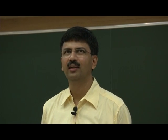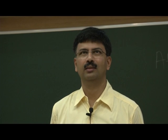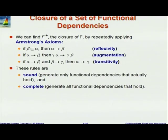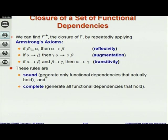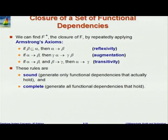How do we know only these three rules are enough? These three are claimed to be sufficient — if anything can at all be logically derived, you can derive it using exactly these three rules. The proof is non-trivial. They are sound (anything derived is correct) and complete (they generate all functional dependencies that hold). Showing completeness is the hard part.